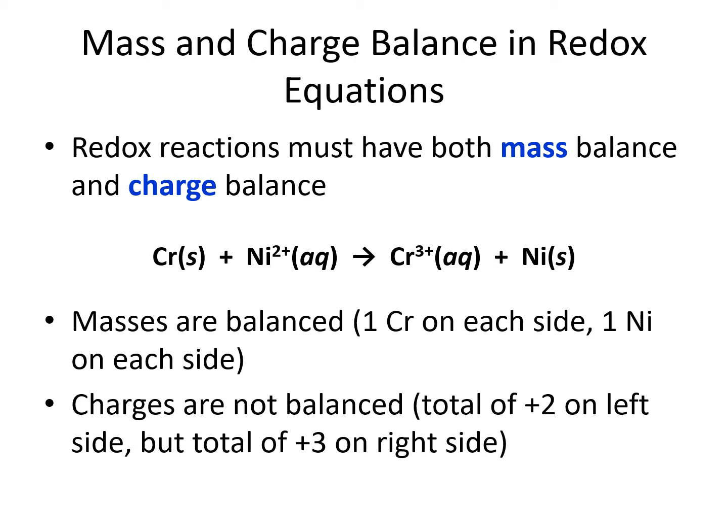For redox reactions, not only does the mass have to balance, but the charge also has to balance. We're going to have to balance the masses just like we've done in the past — if we've got one chromium on the left, we need one chromium on the right — but we also have to make sure the charges on each side of the equation equal each other. In this equation, we have chromium solid reacting with nickel 2+ ions to make chromium 3+ and nickel solid. When we look at this equation, the masses are balanced: one chromium to one chromium, one nickel to one nickel. But the charges are not balanced — on the left side we have a total of plus 2, and on the right side we have a total of plus 3. This is not a balanced redox equation yet.